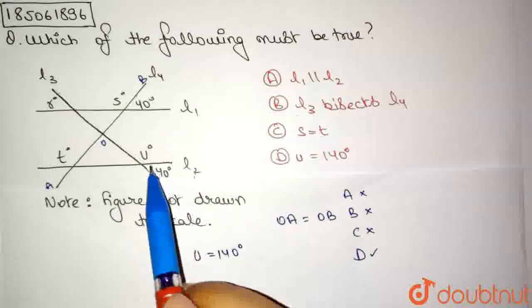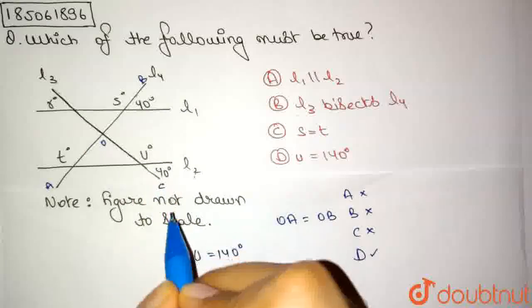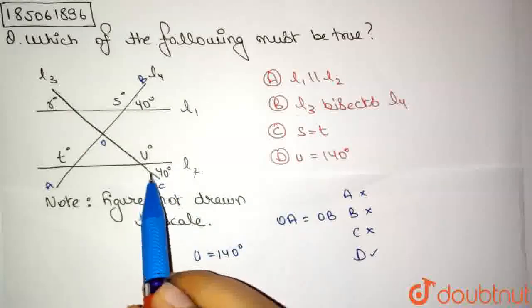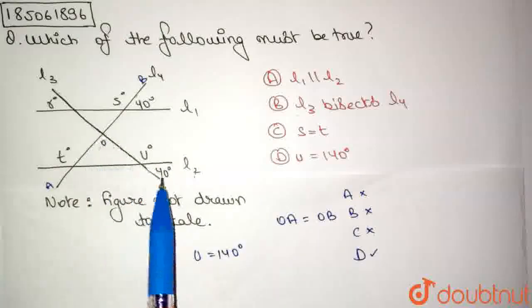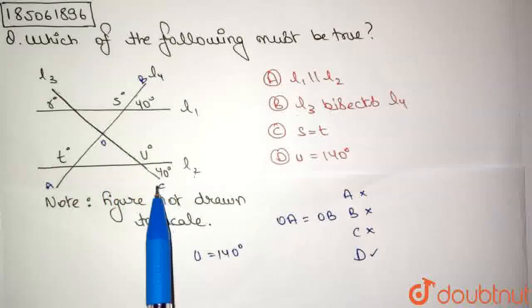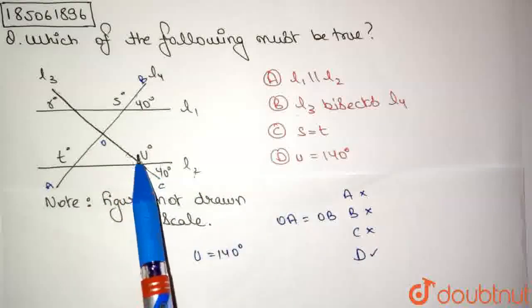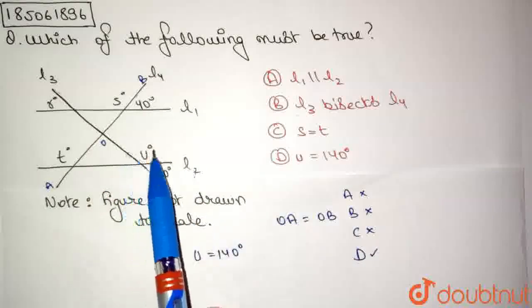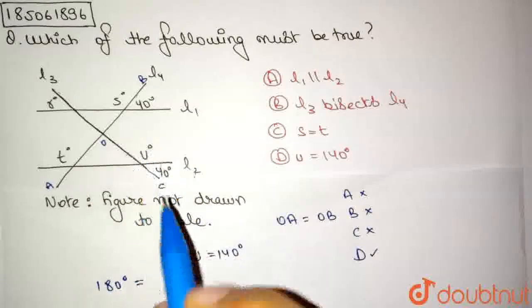Now, we have this angle is 40 degrees. If I call this OC, this angle over here is 40 degrees. We know that the complete angle on one side of any line or line segment is 180 degrees. So towards the right of OC, to this side of OC, the total sum of angles at this intersecting point with L2 is 180 degrees. So I know that 180 degrees equals 40 degrees plus U.